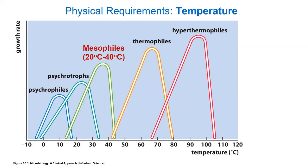Biologists group organisms by temperature preference. Medically relevant organisms are called mesophiles — they like a moderate temperature. Thermophiles like heat and are relevant for food safety since some survive canning. Psychrophiles like cold conditions and are mostly soil organisms. The mesophiles are the ones we care about medically.